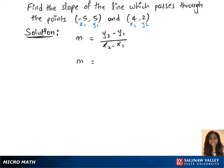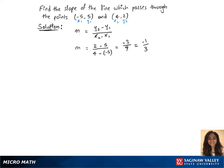Which is m equals, y2 is 2, minus y1 is 5, over x2 is 4, minus x1 is minus 5, and this gives us minus 3 over 9, which is minus 1 over 3. That's our slope.